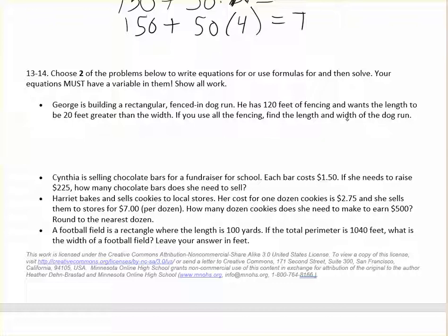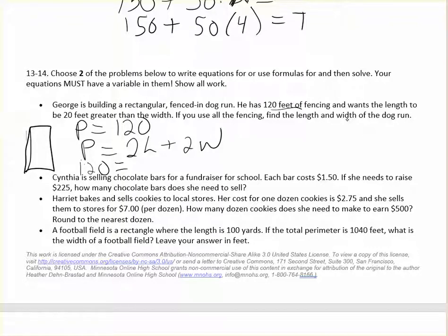This is one where a formula will come in handy. This is a rectangle. And we're really, we're given 120 feet of fencing. So that's the perimeter. We know that the perimeter needs to be 120 feet. We also know a formula for perimeter. If you have a rectangle, the formula is, you could do length plus length plus w plus w. But a lot of people use 2 times l plus 2 times w.